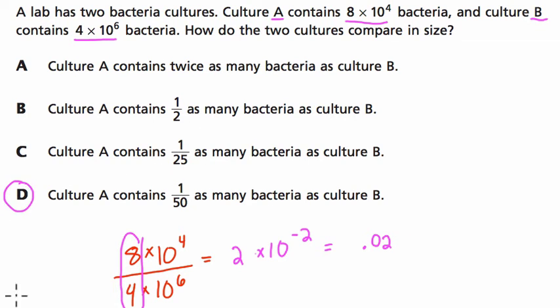Well, it equals 1/50th, right? So culture A contains 1/50th as many bacteria as culture B. 0.02, of course, you can think of that as literally two, not two tenths, that would be two here, but two hundredths. And if we reduce that fraction, we get 1/50th, which is where that's coming from.